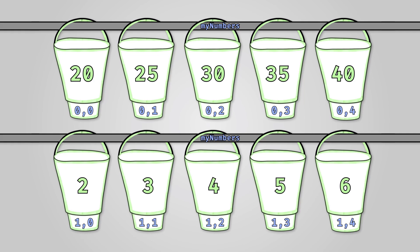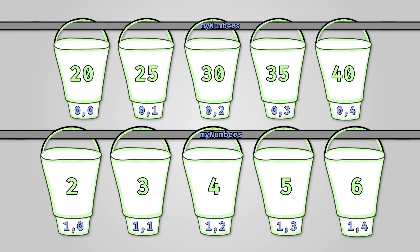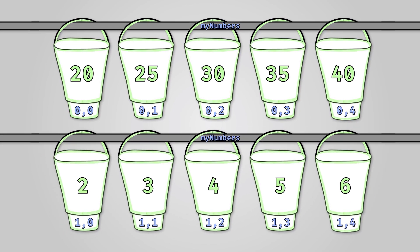Two-dimensional arrays are created in a manner very similar to creating one-dimensional arrays. In the following examples, we are going to create an array called myNumbers to store the integers 20, 25, 30, 35, and 40 in the first row and 2, 3, 4, 5, 6 in the second row. This is kind of like having two one-dimensional arrays.